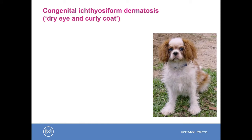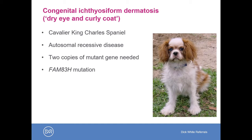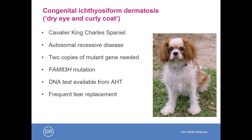In the Cavalier King Charles Spaniel with dry eye and curly coat, or congenital ichthyosiform dermatosis, this is an autosomal recessive disease — the affected dog needs two copies of the bad gene to be affected. The gene in question is FAM83H. A DNA test is available from the Animal Health Trust in the United Kingdom. Similar to other congenital dry eyes, these patients require very frequent replacement therapy. Lacrimomimetic stimulants — cyclosporine and tacrolimus — have been tried in these patients, but response is variable and often not significant.